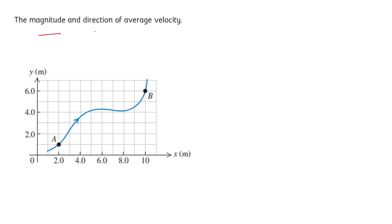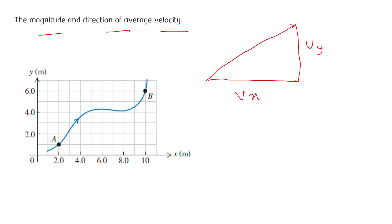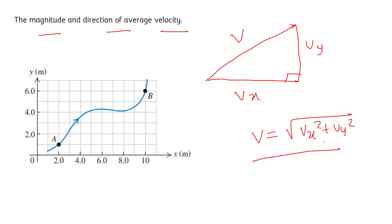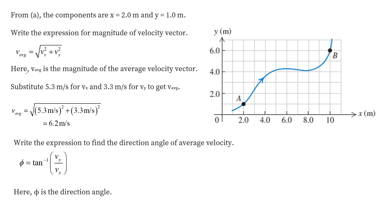Here, we have to find the magnitude and direction of the average velocity. We know the x component of velocity and the y component of velocity, so we can find the magnitude. We write V equal to the square root of Vx² plus Vy². Substituting the values of Vx and Vy, the magnitude comes out to be 6.2 meters per second.